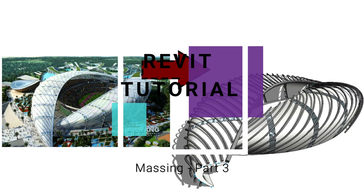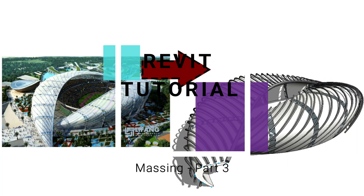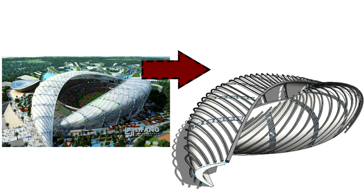Hello everyone, this is the last video in this building design using a massing technique. The link to the previous two parts is given below in the description box — don't forget to watch them before you continue. In the following video I am going to show you how you can add curvilinear structural frames as a mass in Revit. Don't forget to like, share, leave a comment, give constructive feedback, and subscribe to my channel.